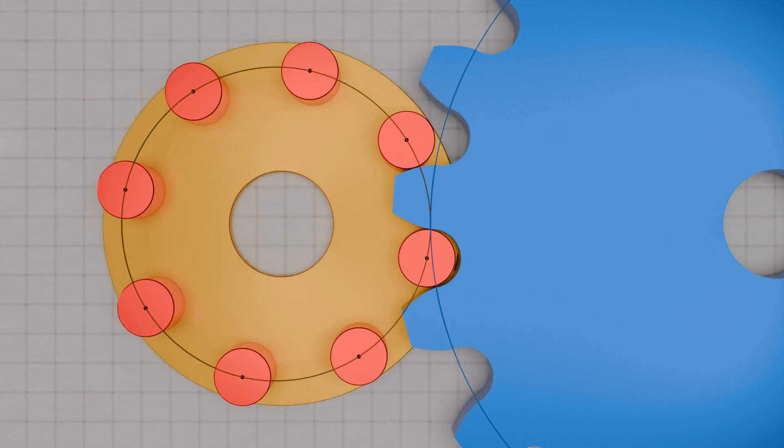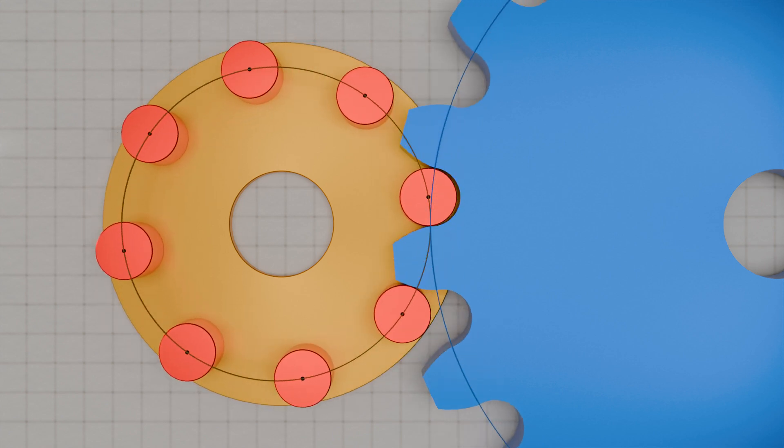In practice, the cycloidal shape of the tooth profile is often approximated by an involute because it is easier to manufacture.